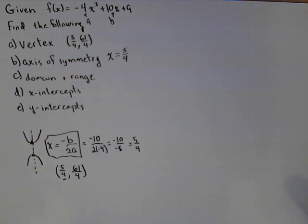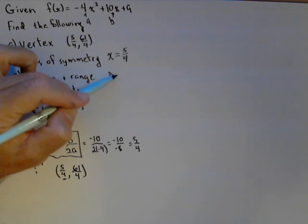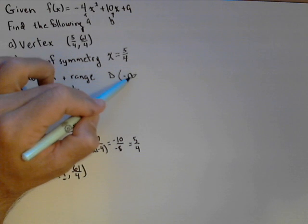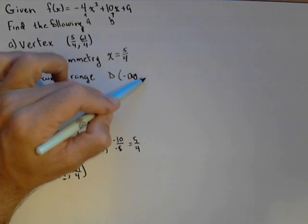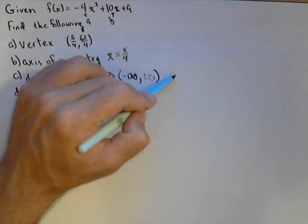Now we are asked to find the domain and range. Unless we're in some context, the domain of all quadratic functions is negative infinity to infinity. All real numbers will work for a quadratic.